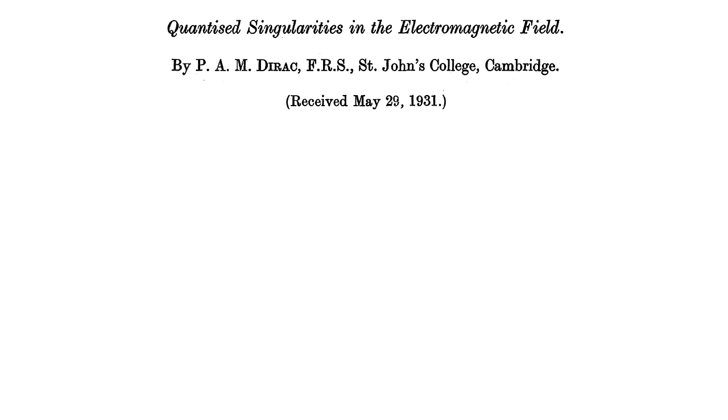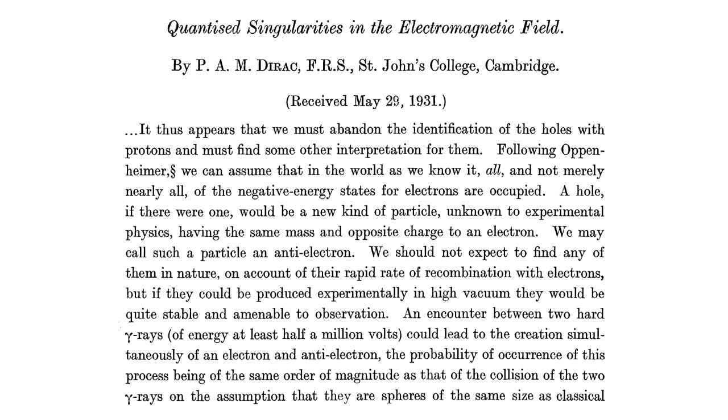In 1931, Dirac submitted his prediction for publication. He claimed, a hole, if there were one, would be a new kind of particle, unknown to experimental physics, having the same mass and opposite charge to an electron. We may call such a particle an anti-electron. And there you have the prediction of antimatter.